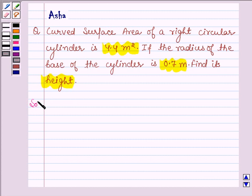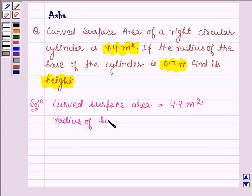So let's begin with the solution. We are given that curved surface area of a right circular cylinder is 4.4 m², and also the radius of base of the cylinder